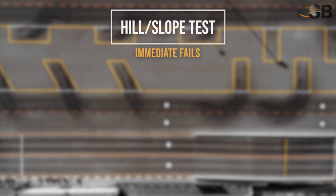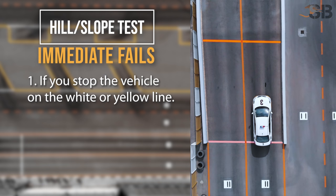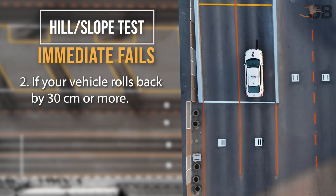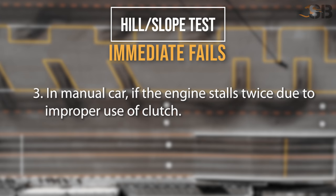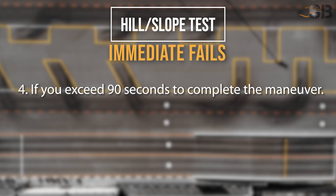Immediate Fails: an immediate fail will apply for each of the following major faults. Number 1: if you stop the vehicle on the white line or yellow line. Number 2: if your vehicle rolls back by 30 cm or more. Number 3: in a manual car, if the engine stalls twice due to improper use of the clutch. Number 4: if you exceed 90 seconds to complete the maneuver.